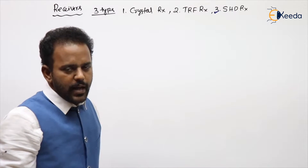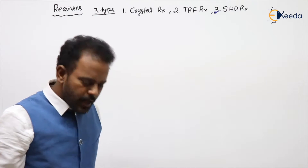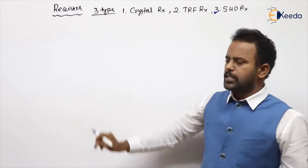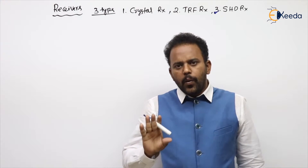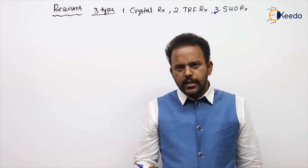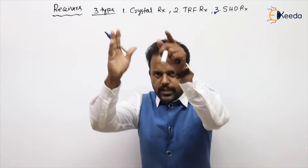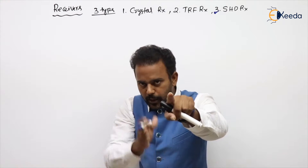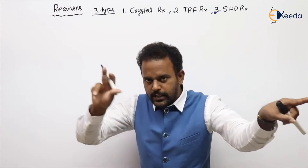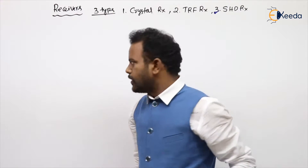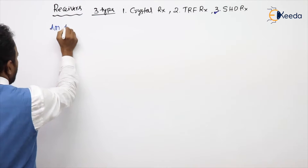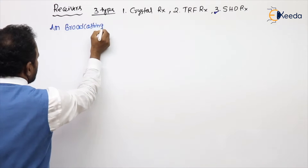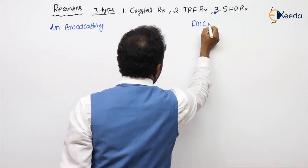In your mobile, an SHD receiver chip will be there. Before going further, I will introduce the standard points for AM broadcasting and FM broadcasting. You can make notes with one page split in half — one side for AM broadcasting and the other side for FM broadcasting.